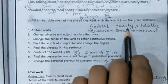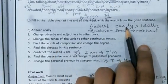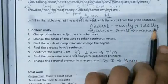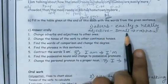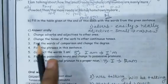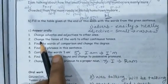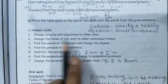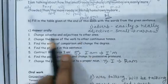The adverb is 'easily' and you have to change it to 'really'. The adjective given is 'small' and you have to change it to 'narrow'. Now the second question has been given: change the tense of the verb.